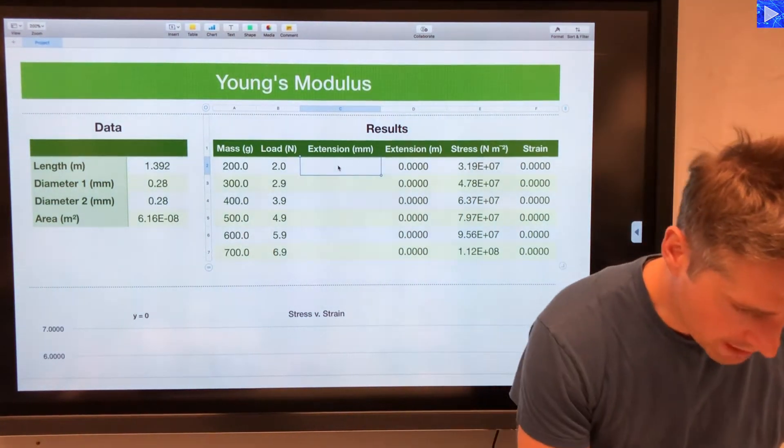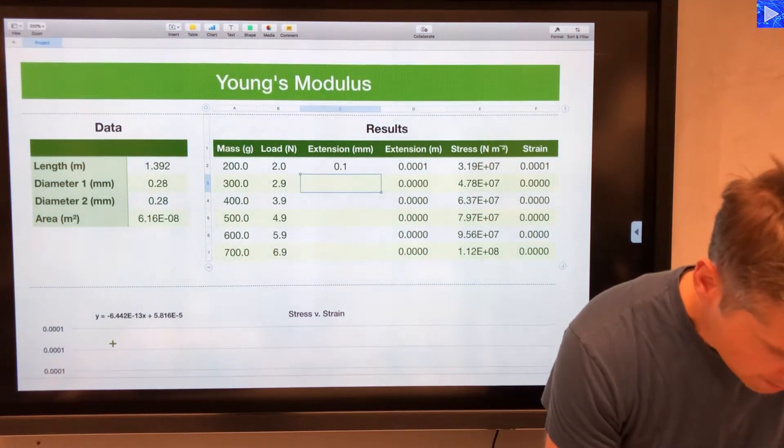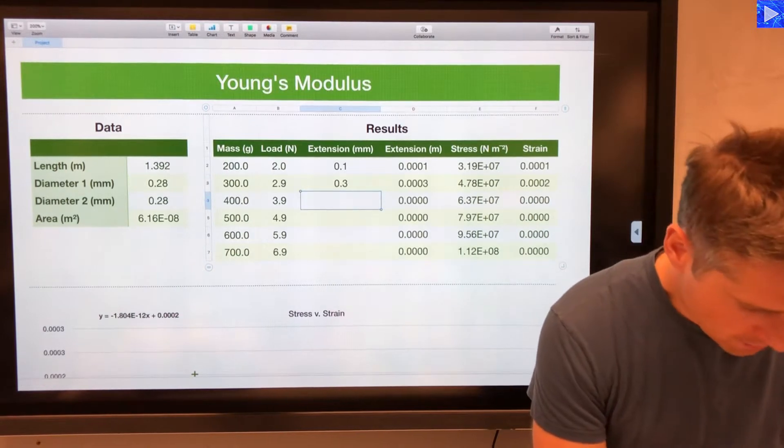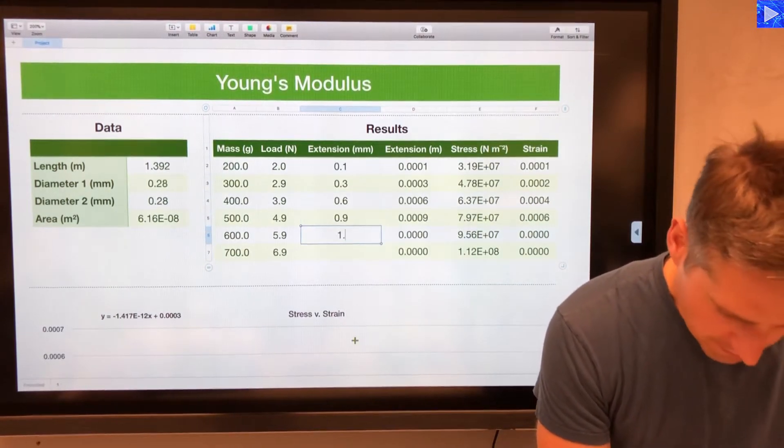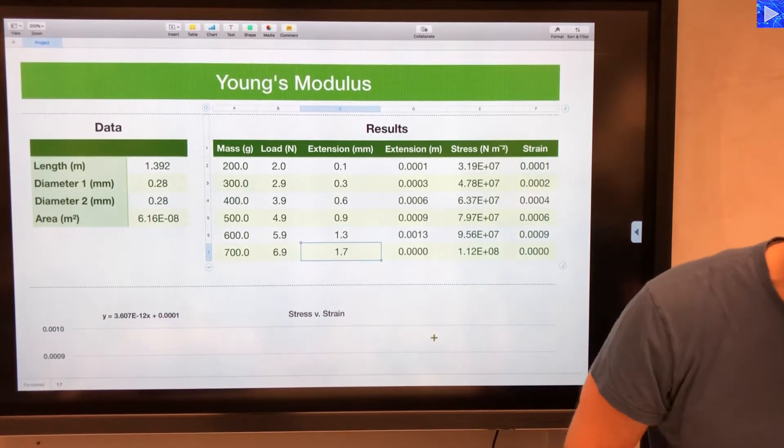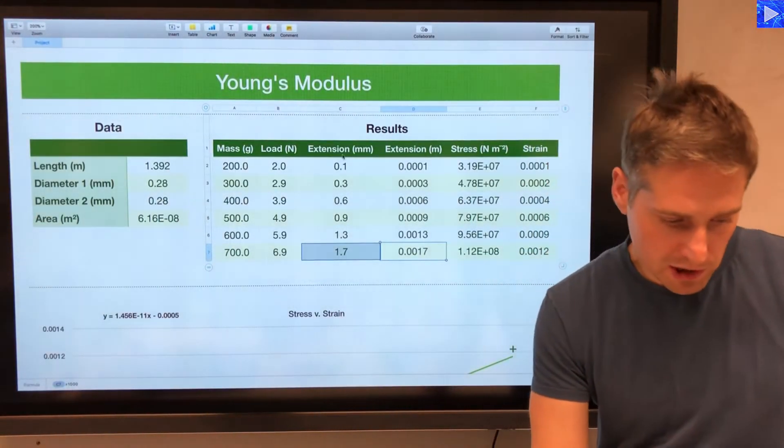So we get 0.1, 0.3, 0.6, 0.9, 1.3, 1.7. So those are my extension values.